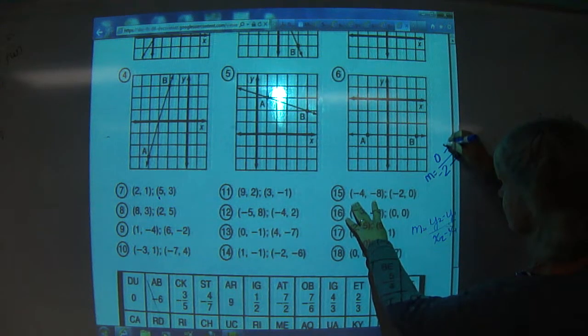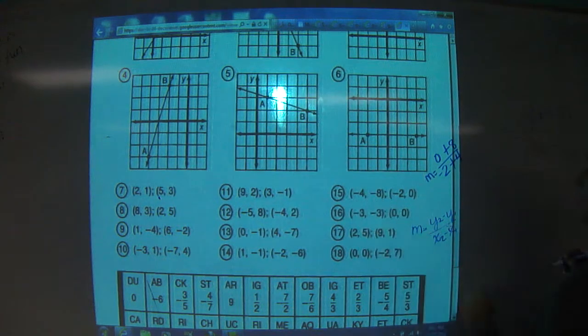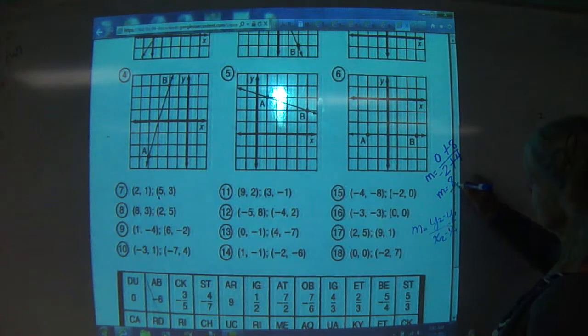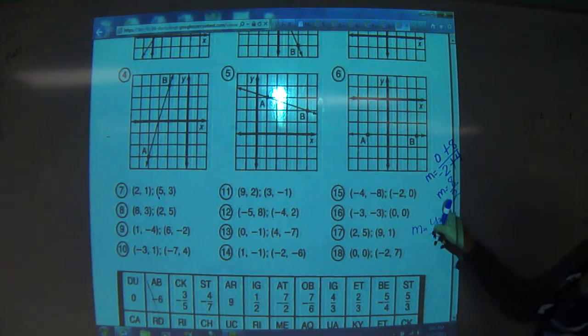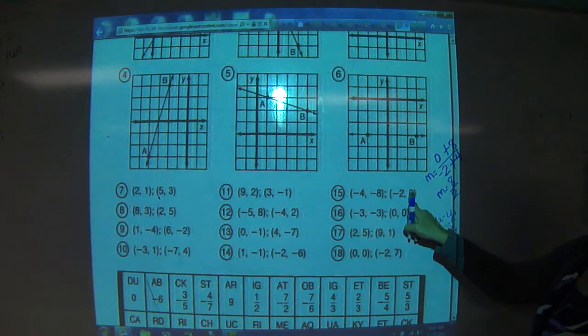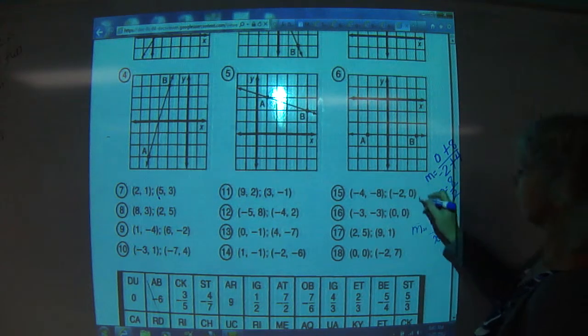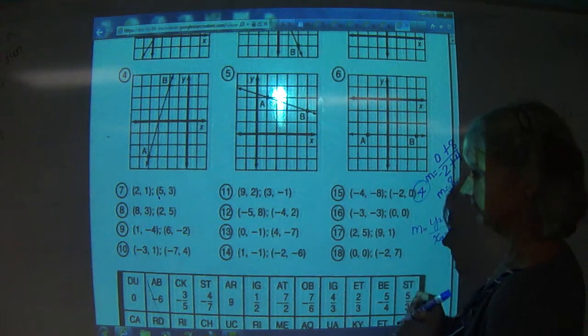These are both negative, so I'm going to subtract them, so I turn them into positives. So we get M equals eight over two. So what's our slope on this one? Eight over two equals four. And there it is.